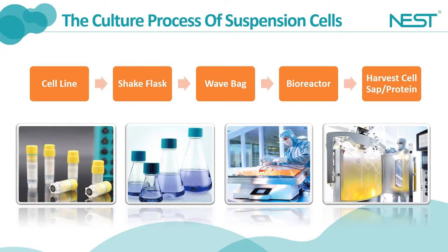At the stage of shake flask culture, the optimum culture conditions are obtained via exploration and the cells receive further culture expansion. The maximum volume of nest shake flask is 5 liters, and then the culture will be transferred to a wave bag and bioreactor gradually. The circular rotation of shake flasks and the wave movement of wave bags both aim for better gas exchange and to prevent cell precipitation at the bottom.